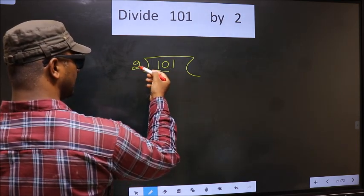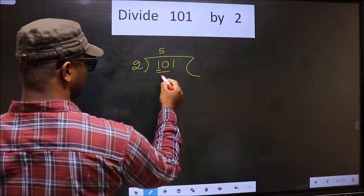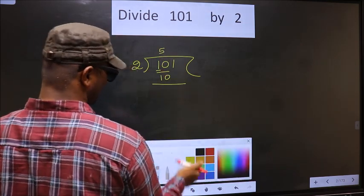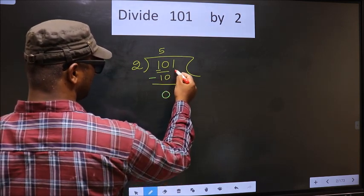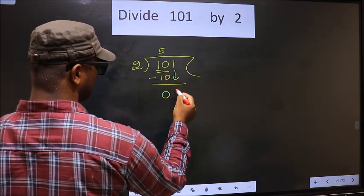When do we get 10 in 2 table? 2, 5, 10. Now you subtract. 10 minus 10, 0. Now you bring the beside number 1 down.